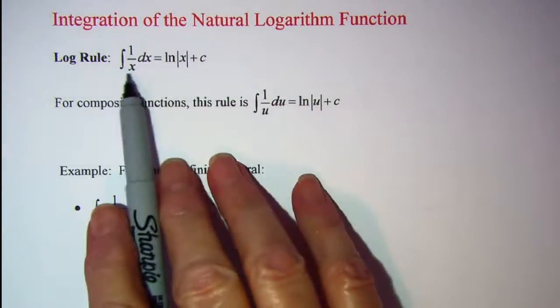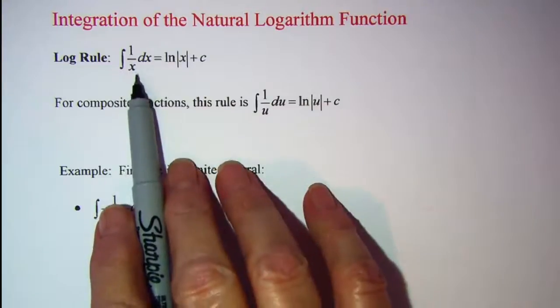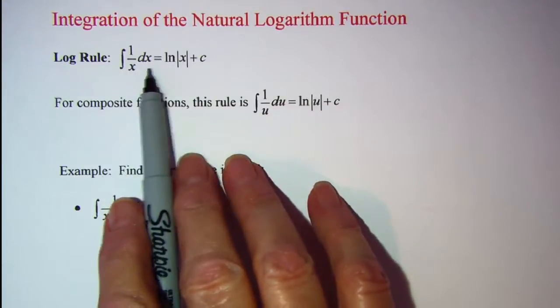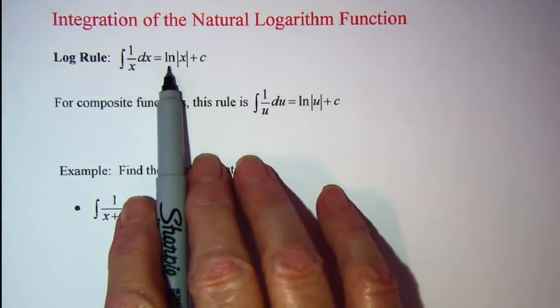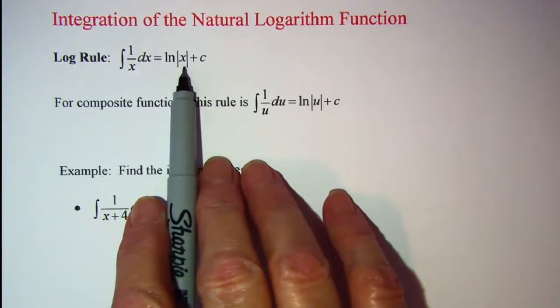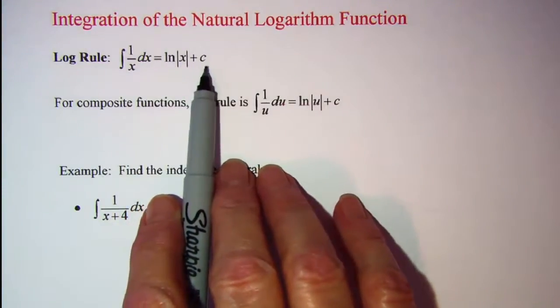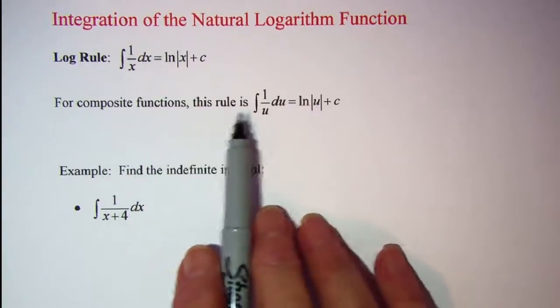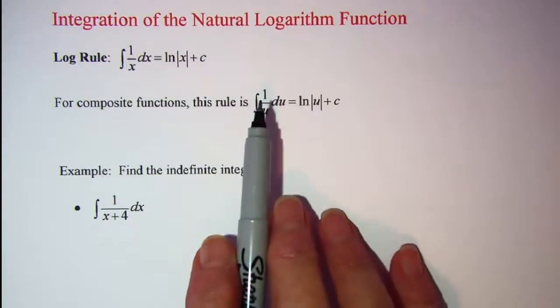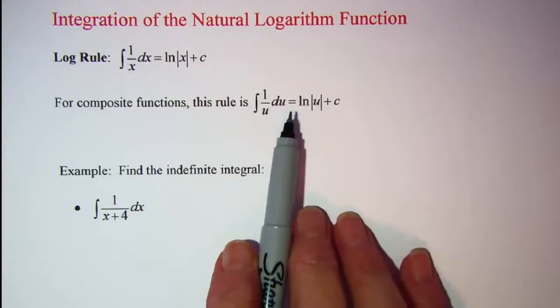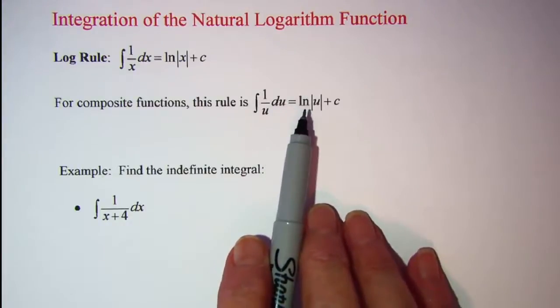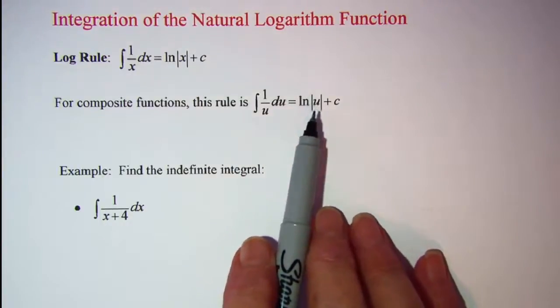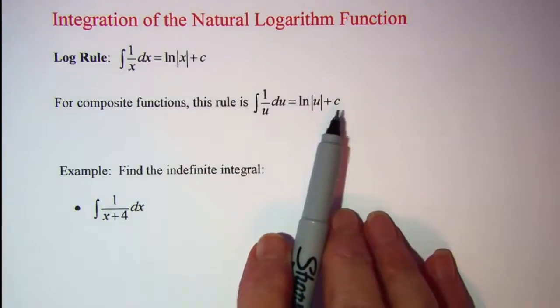The rule we'll be using is: the integral of 1 over x dx equals the natural log of the absolute value of x plus a constant c. For composite functions, this rule is: the integral of 1 over u du equals ln of the absolute value of u plus c.